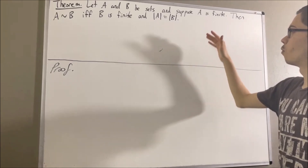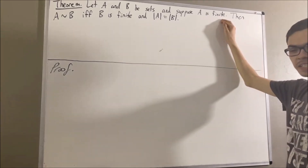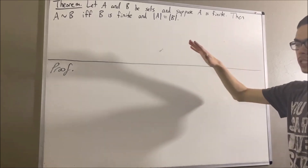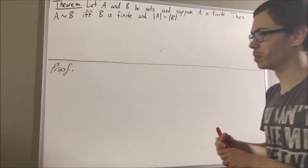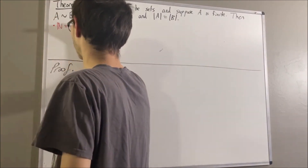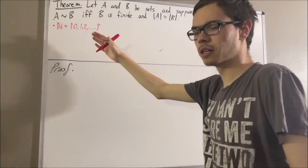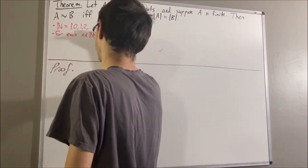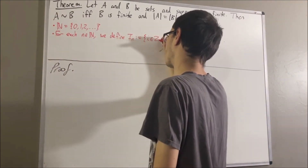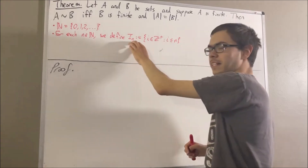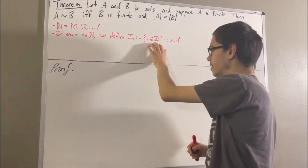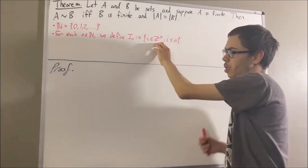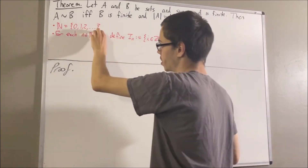First of all, what do we mean by a finite set? For our purposes, we're going to say that the natural numbers includes zero. And for each natural number n, we define the following set. We define the set I_n to be the set of all positive integers less than or equal to n, where the positive integers are just the natural numbers not including zero.